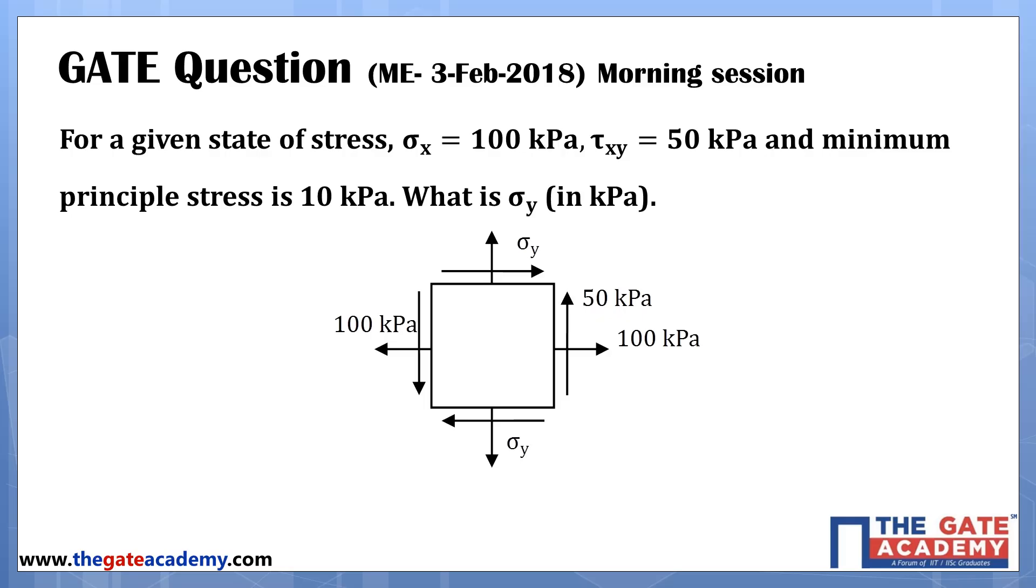For a given state of stress, sigma x is 100 kilopascal, tau xy is 50 kilopascal, and minimum principal stress is 10 kilopascal. What is the value of sigma y in kilopascal?